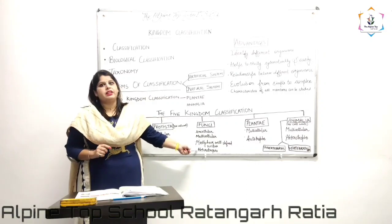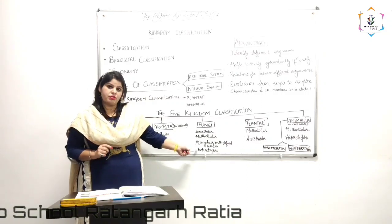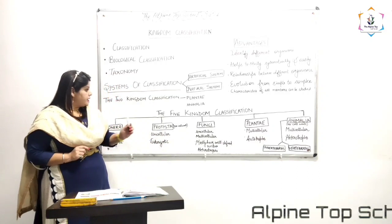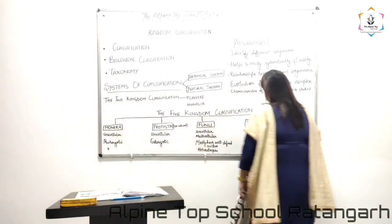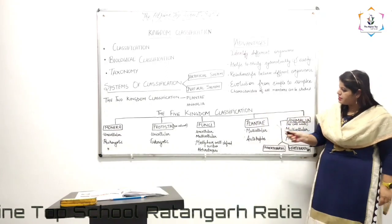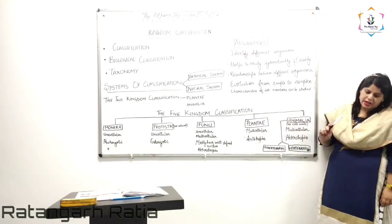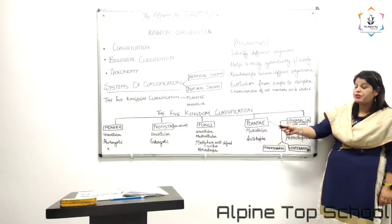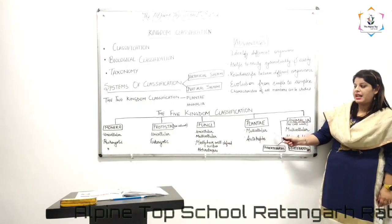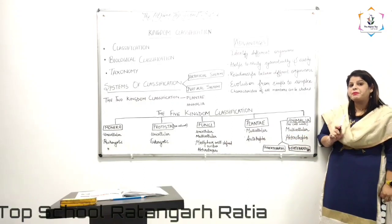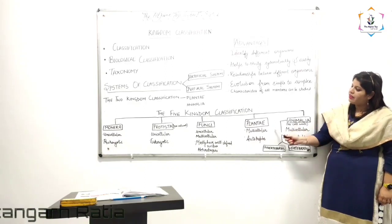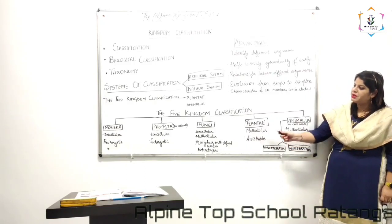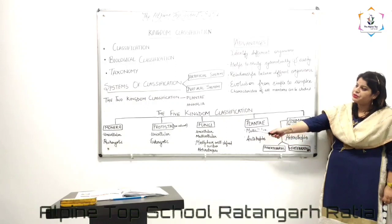For example, Fungi feed on dead organic matter. White-colored mushrooms that we eat at home are an example of Fungi. Next is Plantae. Plantae consists of multicellular organisms, just like Fungi, but the key difference is that plants are autotrophs — they prepare their own food — and they have a cell wall around their cell structures. These are the differences that make Plantae distinct from the others.